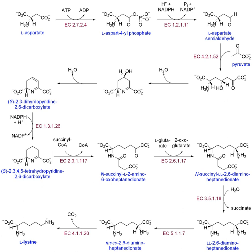Severe combined immunodeficiency (SCID) is characterized by a loss of T cells. Shortage of these immune components increases susceptibility to infectious agents because affected individuals cannot develop immunological memory. This disorder results from a deficiency in adenosine deaminase activity, causing a buildup of dATP, which inhibits ribonucleotide reductase and prevents DNA synthesis. Huntington's disease is a neurological disease caused by errors during DNA synthesis. These mutations lead to expression of a mutant Huntington protein containing repetitive glutamine residues encoded by expanding CAG-trinucleotide repeats in the gene. The disease is characterized by neuronal loss, gliosis, movement disorder, cognitive decline, and behavioral disorder.